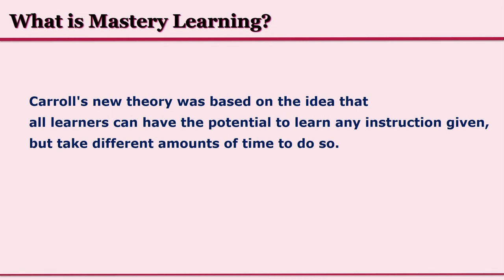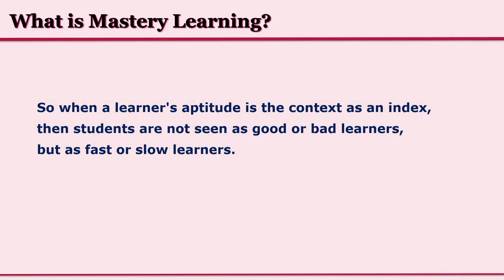Every learner can take a different amount of time, but ultimately all learners are capable of learning to the extent that the instructor decides they should reach. When a learner's aptitude is considered as an index, students are not seen as good or bad learners, but as fast or slow learners.